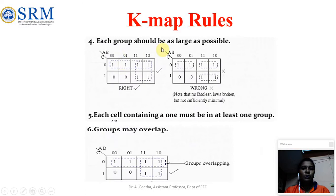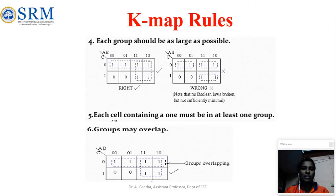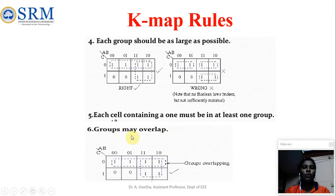Rule number 4: Each group should be as large as possible. For example, if a group can be formed as a pair or as a quad, we should go for the quad, since a higher order number of 1s in a group results in a more reduced logical expression. For the same problem, 2 quads are preferable over 3 pairs because fewer and larger groups produce fewer terms in the expression. Rule number 5: Each cell containing a 1 must be in at least one group. Rule number 6: Groups may overlap — overlapping of 1s across groups is allowed.